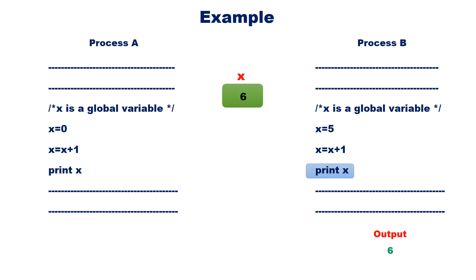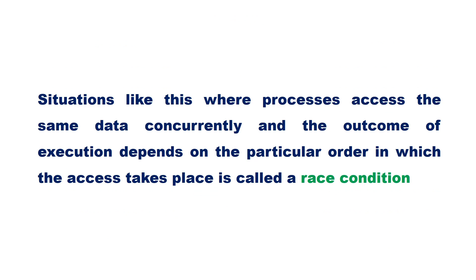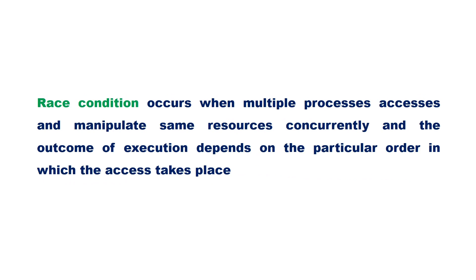Assume that Process B is interrupted and Process A resumes. Process A now prints the value of X and we get the output 6, which is wrong. Process A produced an erroneous output because Process A and B share the global variable X and they perform interleaved execution. Situations like this, where processes access the same data concurrently and the outcome depends on the particular order in which access takes place, is called a race condition. To prevent the race condition, a mechanism is needed to synchronize the execution within the critical sections.